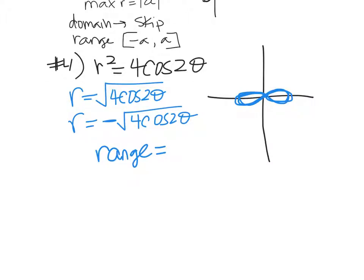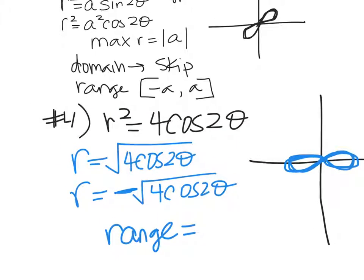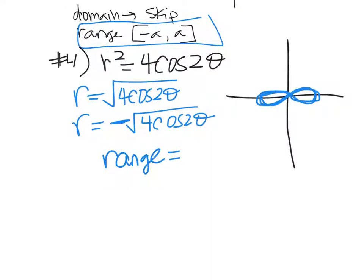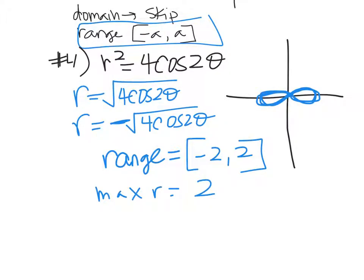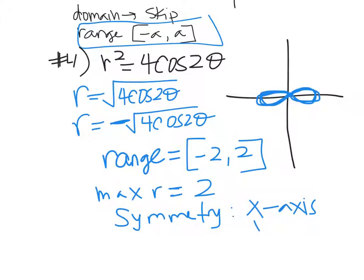You have to trace the other graph too — there are two graphs. The first goes to R = 2, the other goes to negative 2 because of the negative. So the range for these is negative A to positive A — negative 2 to positive 2. The max R is 2, the farthest R value it goes to. The symmetry is a little tricky — it's y-axis, x-axis, and origin. All three.